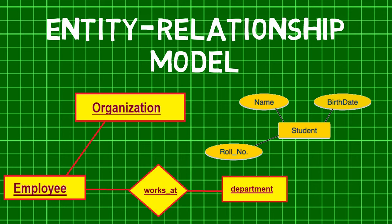The association among entities is called a relationship. For example, an employee works at a department. Here, 'works at' is called a relationship between employee and department.